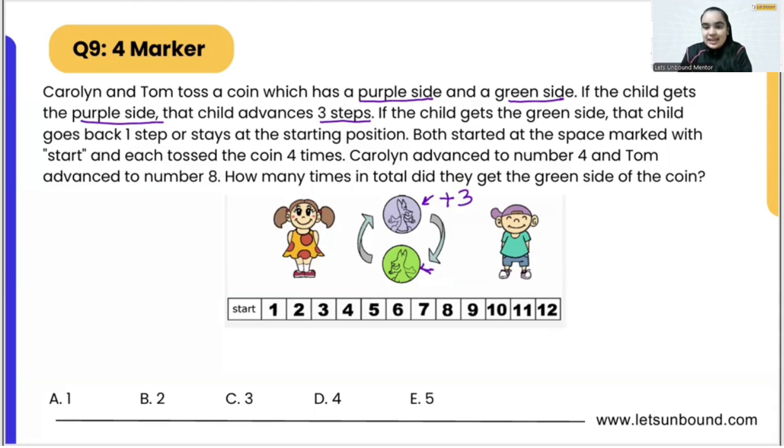If the child gets green side, that child goes back one step or stays at the starting position. So if we are going to get green side, that means we have to go one step back or we will stay at the start position.